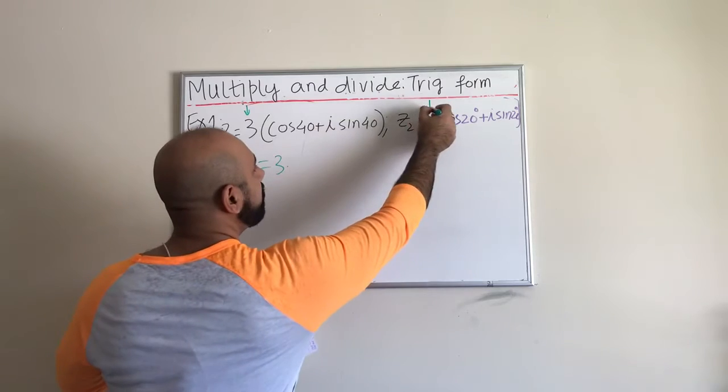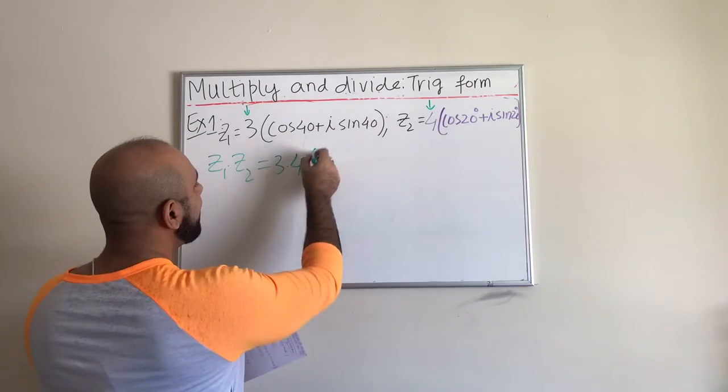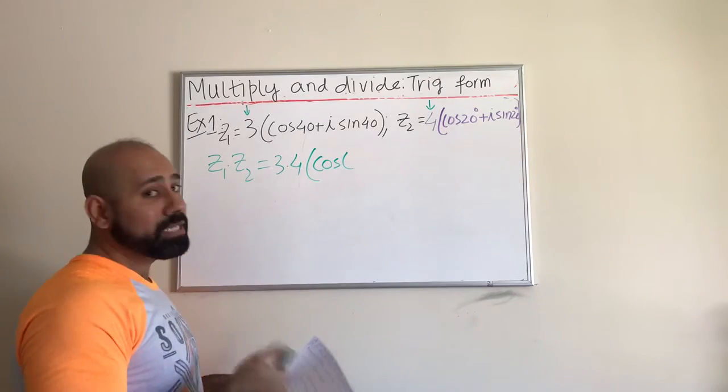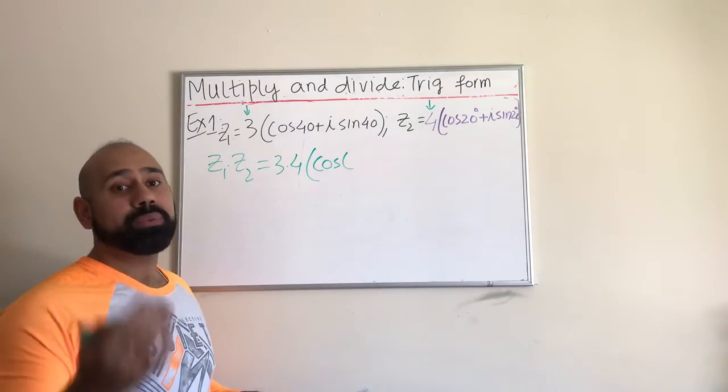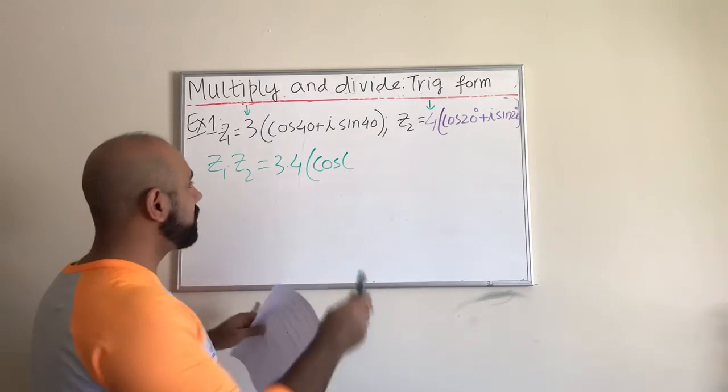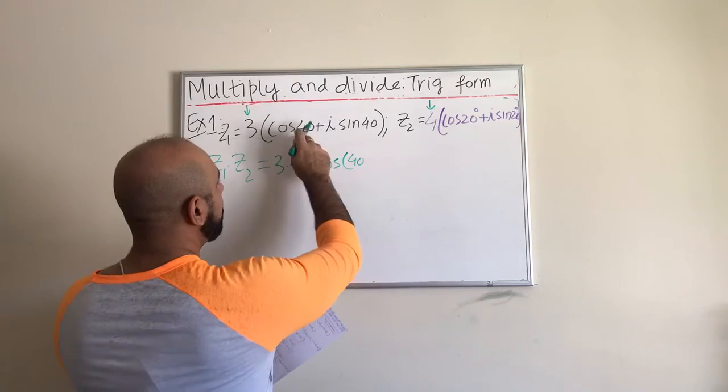So this is my R1 and this is my R2. We take the product of that and then multiply by the cosine of the sum of the angles. When we multiply we have to take the sum, when we divide we have to subtract. We have to take the difference of the angle.